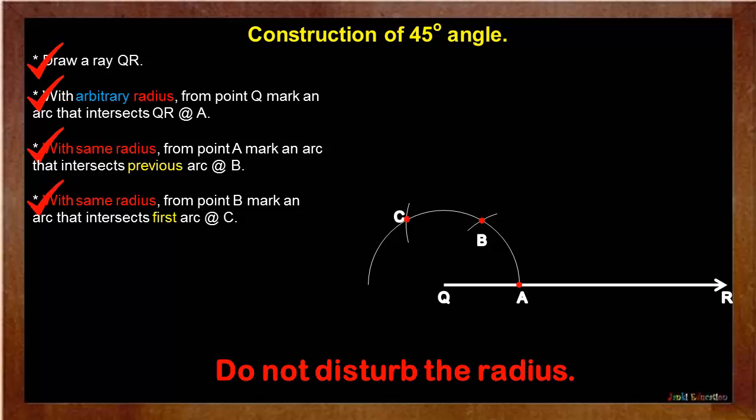Here, you might remember, this point B is 60 degree angle mark and point C is for 120 degree angle.